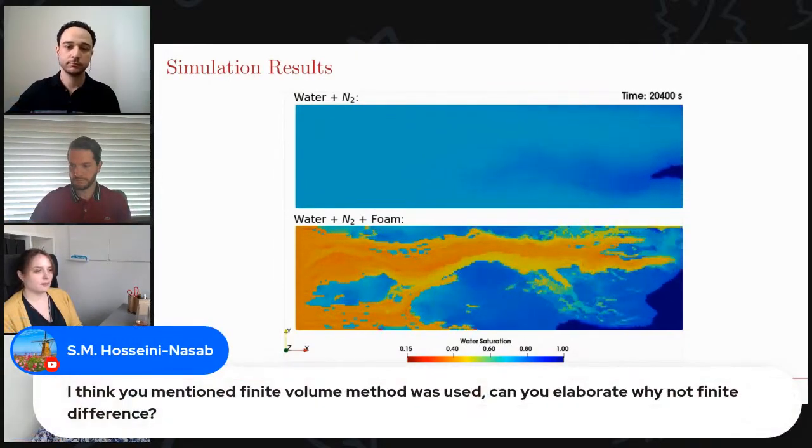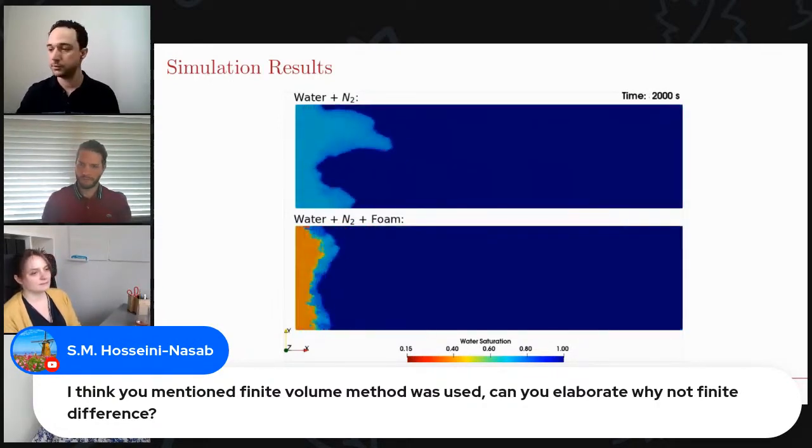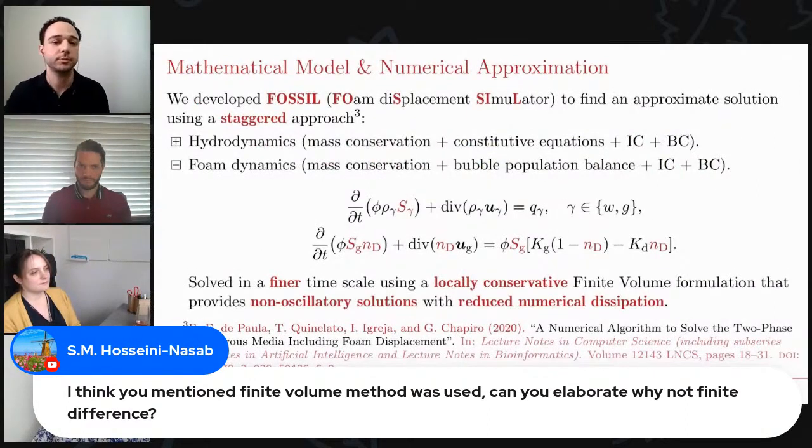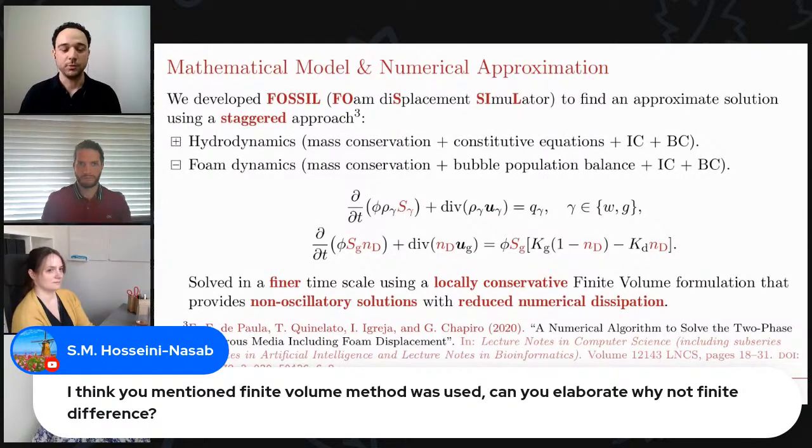There's one more question by Hossein Nassab. I think you mentioned finite volume method was used. Can you elaborate why not finite difference? Oh, okay. Yes. The finite volume method was used for the hyperbolic part of the problem. And it's basically because we wanted to use a flexible framework for locally conservative numerical methods. And well, I believe that they are exchangeable, right? We can rewrite a finite volume formulation in the form of a finite difference formulation. And it was just the way we would like to implement this numerical method.